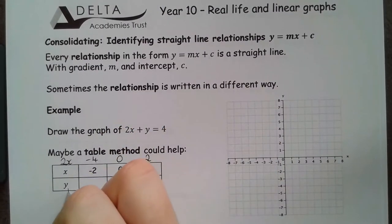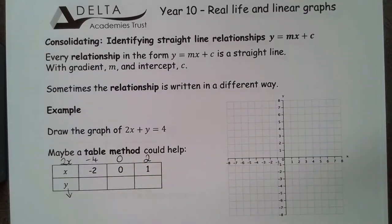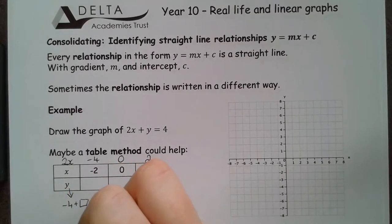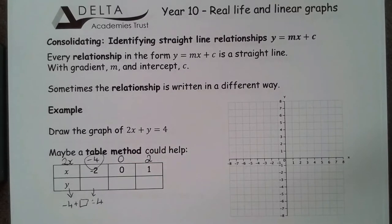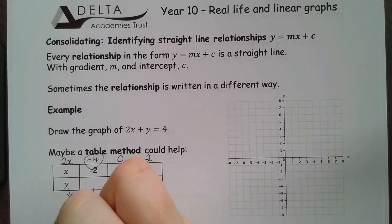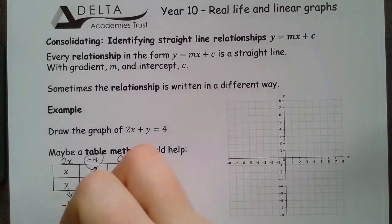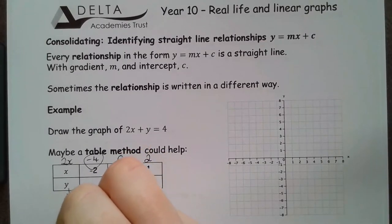To get this y coordinate, I've then got to think about what do I need to add to that thing to make 4. So, negative 4 plus something is going to give me 4 for this first coordinate, that negative 4 coming from here. So, negative 4 plus what makes 4, we can pop this y in here and solve it like an equation. So, y equals, by adding 4 to both sides, 8.